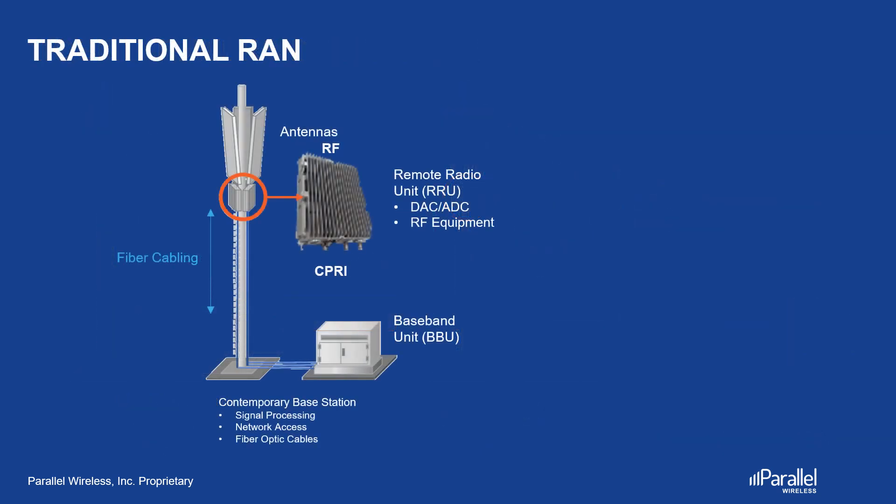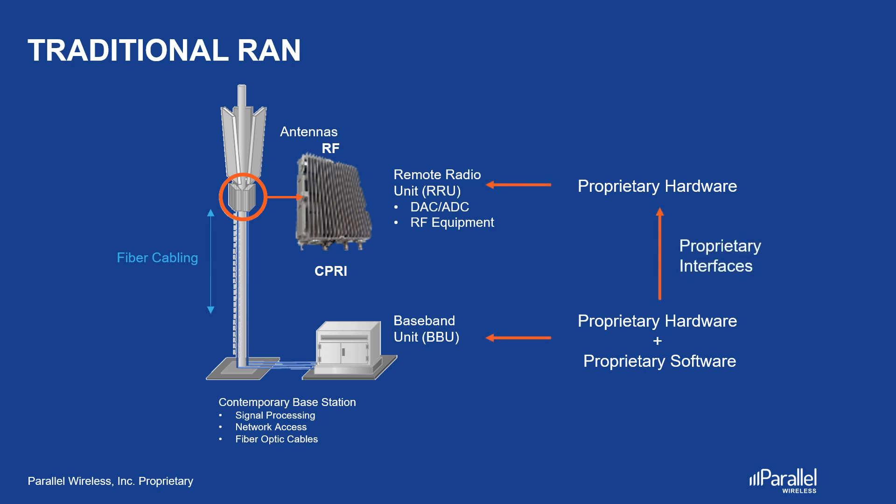Looking at traditional RAN with a contemporary base station as an example, the RRH is always a proprietary hardware. The BBU is proprietary software running on proprietary hardware. And finally, the interfaces between the BBU and RRU are proprietary. The most popular protocol in use on the fronthaul is CPRI, which is vendor specific.